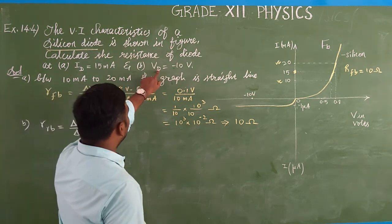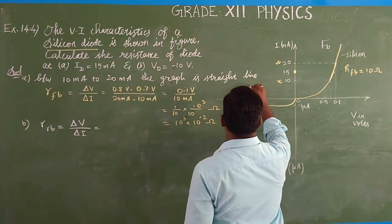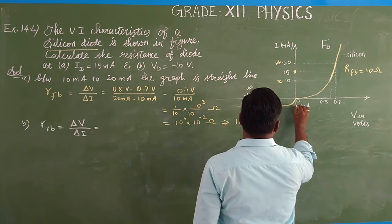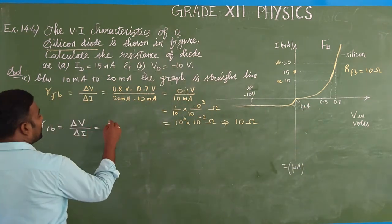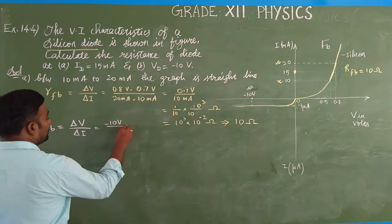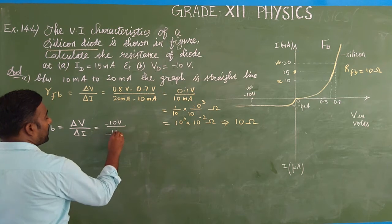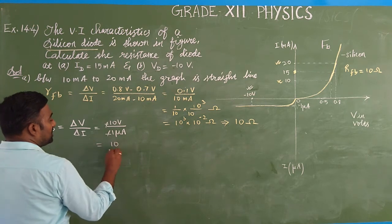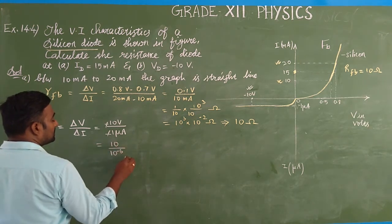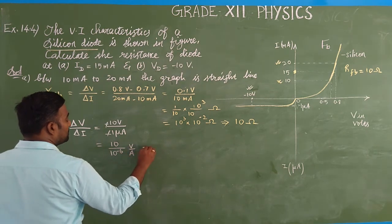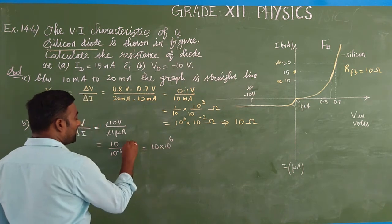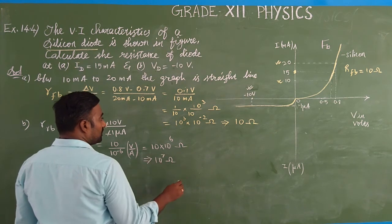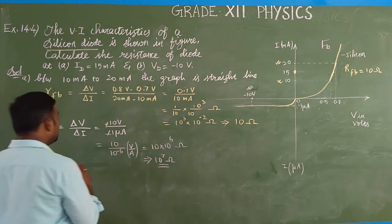They are already given: when the voltage is minus 10 volt, the corresponding current is minus 1 microampere. So directly substitute: minus 10 V divided by minus 1 microampere. The minus signs cancel. We get 10 divided by 10⁻⁶ V/A, which equals 10 × 10⁶ = 10⁷ ohm. This is the answer for the resistance in reverse bias.